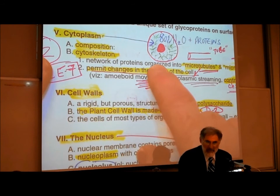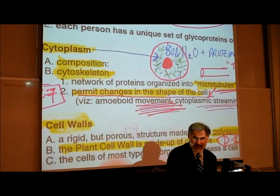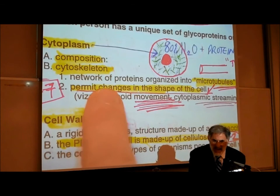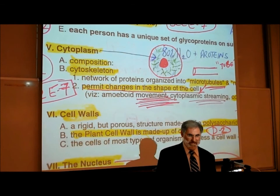Many years ago, people thought proteins in the cytoplasm were just floating around. But we now understand that these proteins are actually organized into a complex pattern called the cytoskeleton — a network of proteins. They are not just floating around; they are organized into what's called a cytoskeleton.